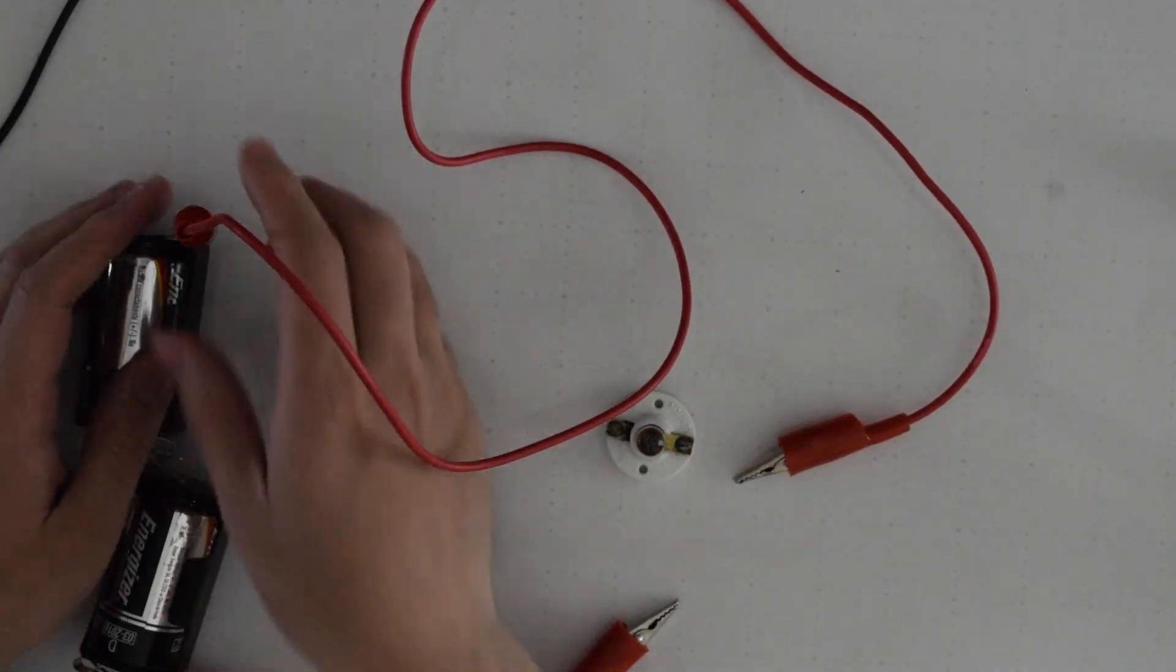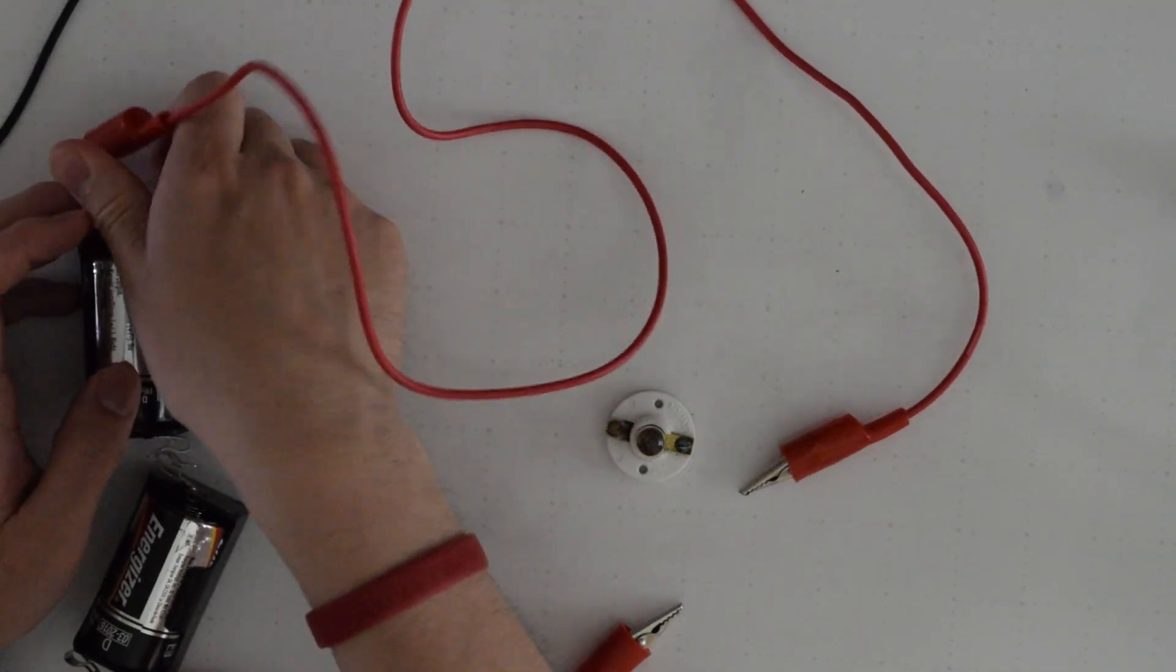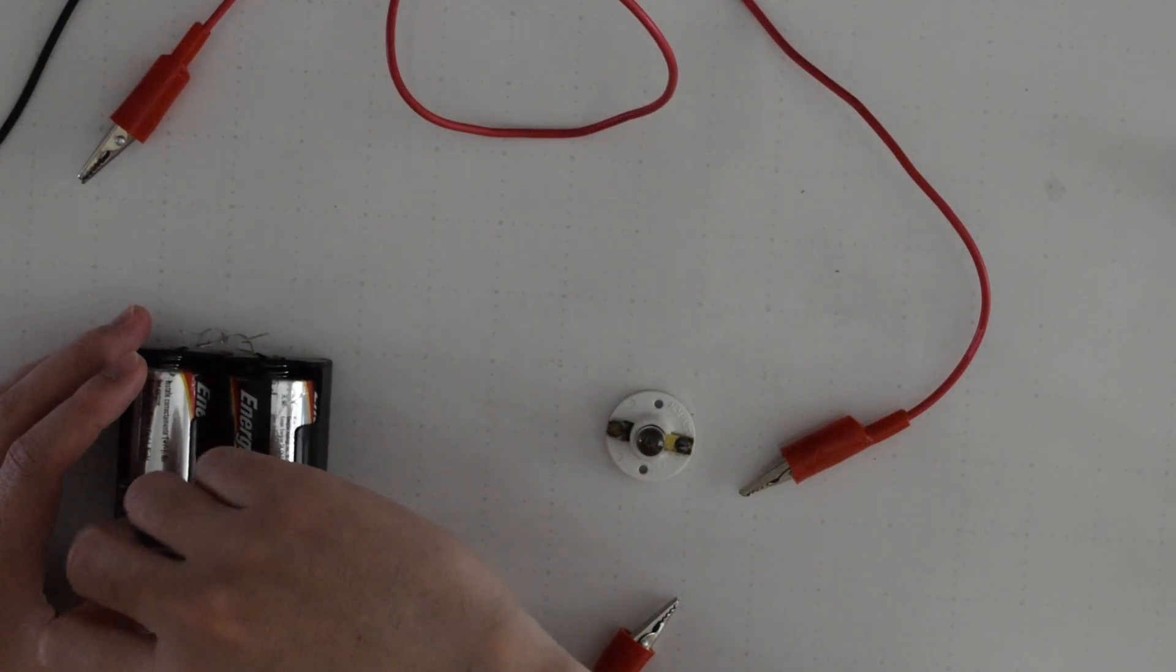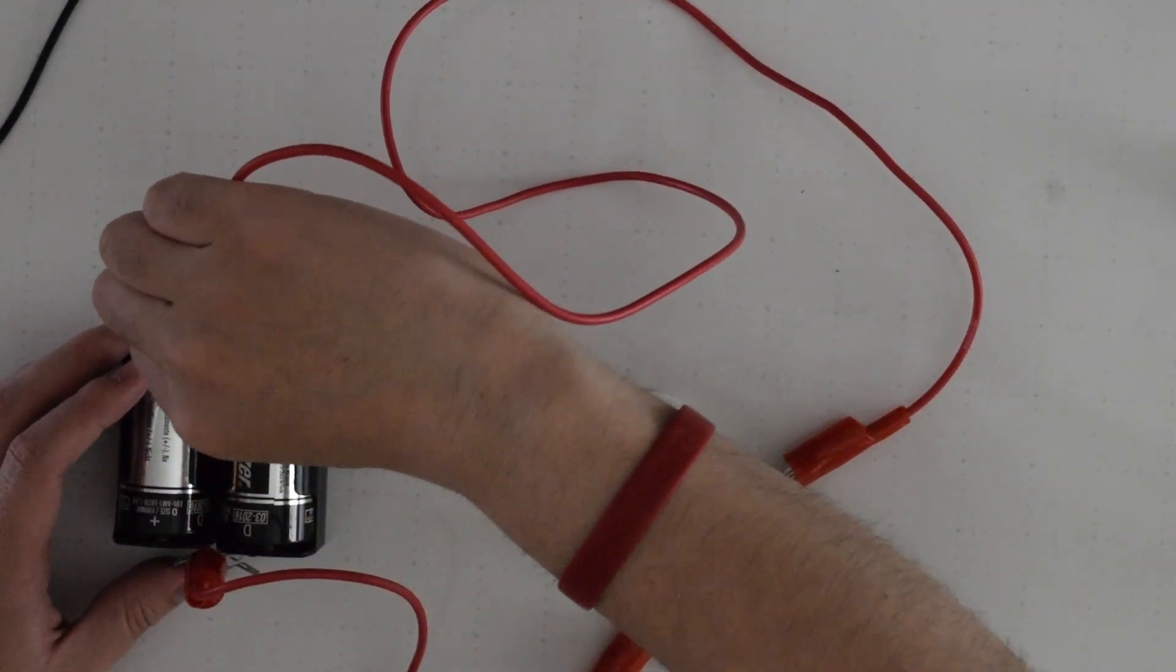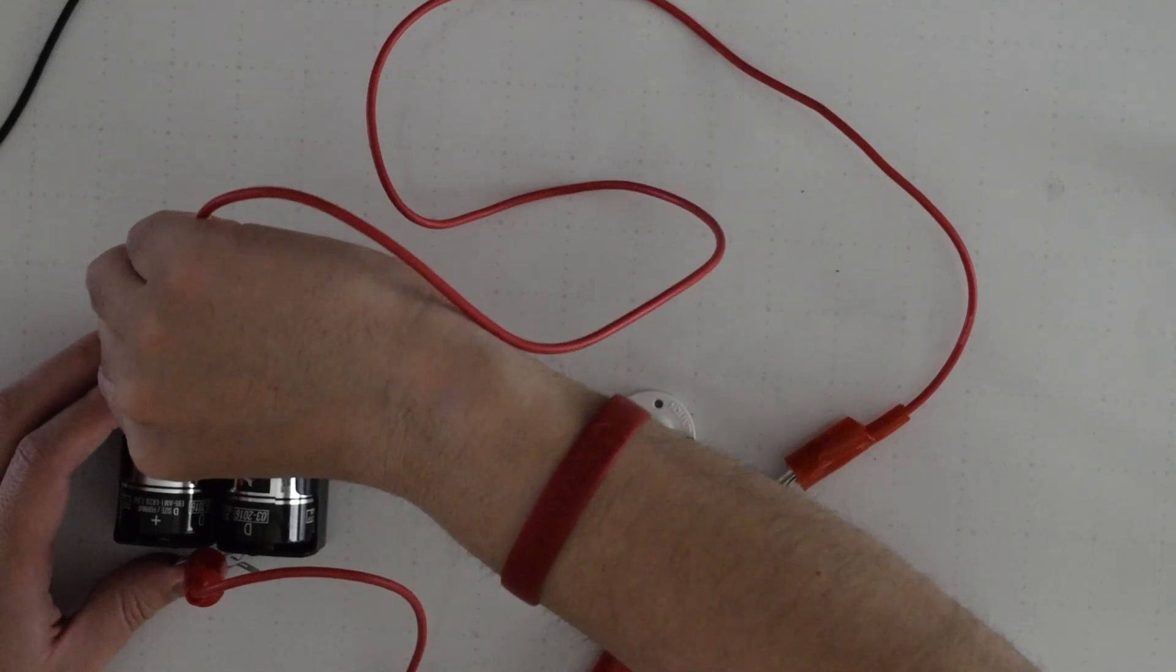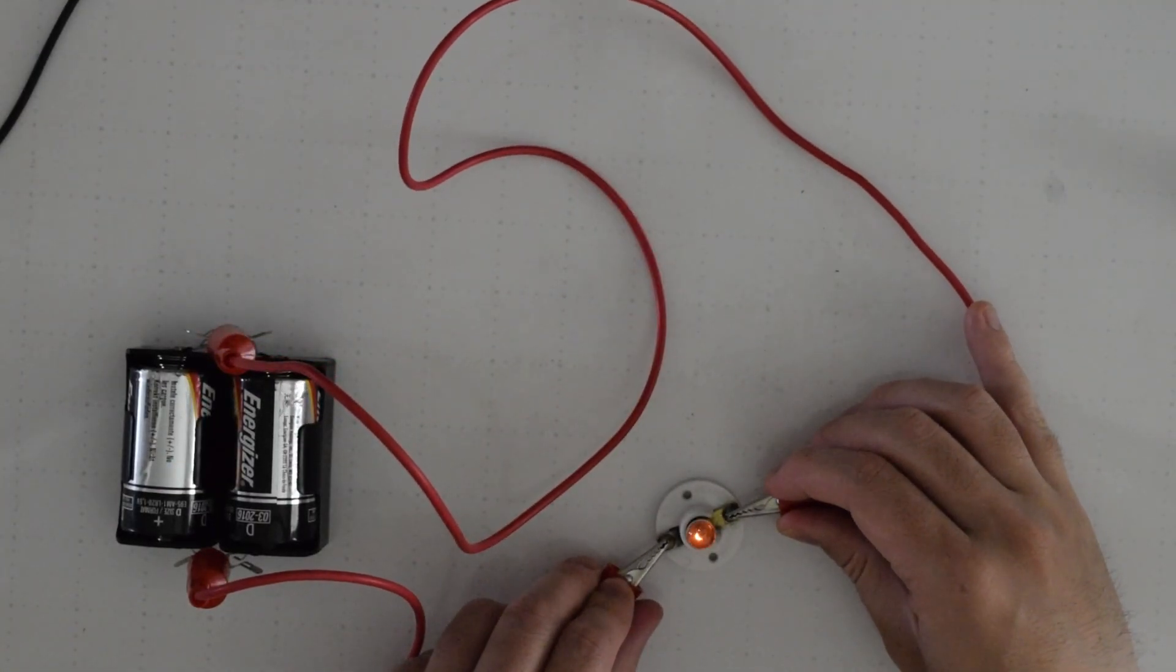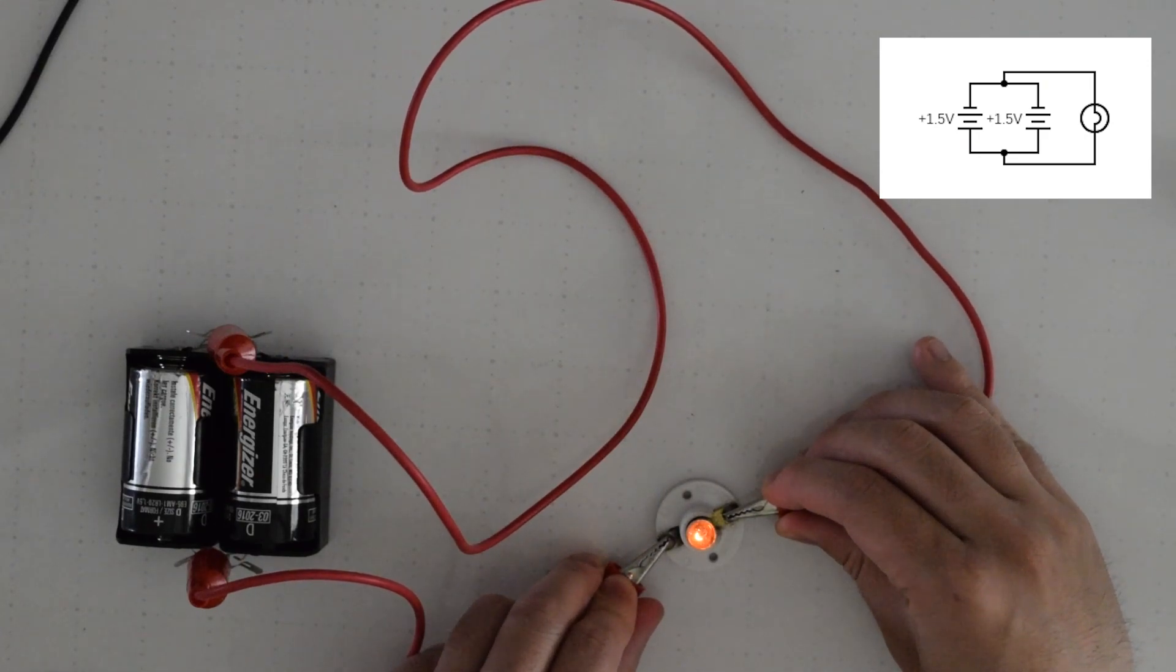Now if I remove the new battery and I connect them in parallel, so what that means is we're going to draw from each battery as opposed to drawing from them sequentially. We can see here that my light bulb kind of turns to the original state.